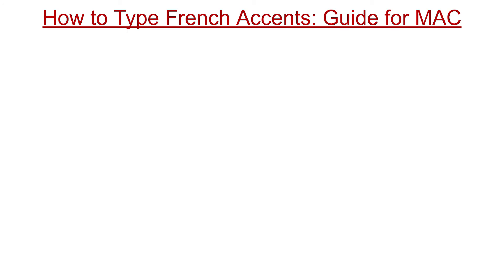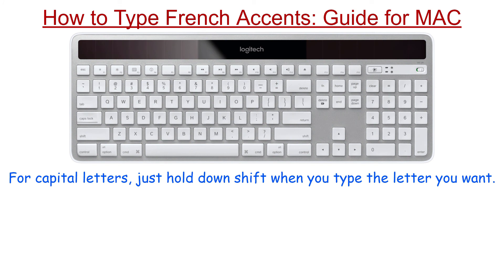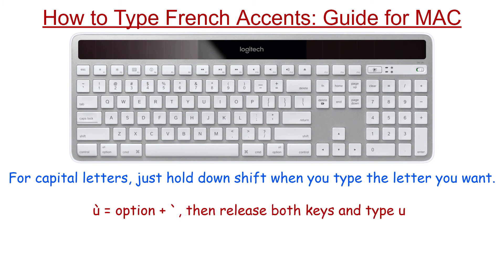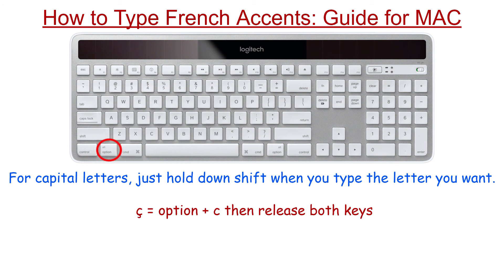How to type French accents — guide for Mac. Fortunately for Mac users, things are easier because the single key combinations are pre-configured. For capital letters, just hold down SHIFT when you type the letter you want. Hold down OPT key and press the SIGN key, release both keys, then type the letter U. Hold down OPT key and press U, then release both keys and press SHIFT E. Hold down OPT key and press C, then release both keys.